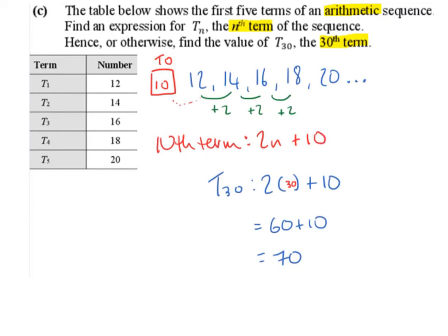Alternatively, you can use your formula in the formula tables. To find t₃₀, the 30th term, we swap n for 30. 2 times 30 is 60, plus 10 is 70. So t₃₀, the 30th term, is 70.